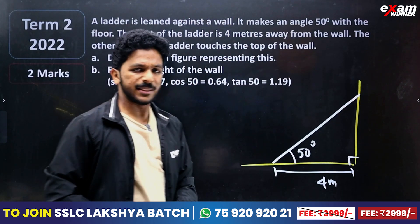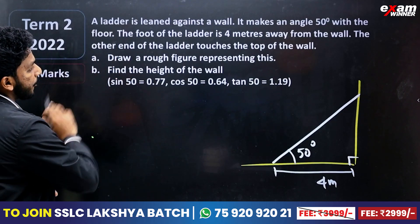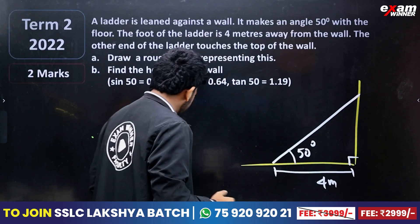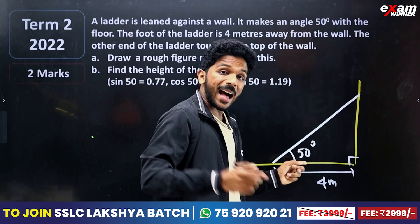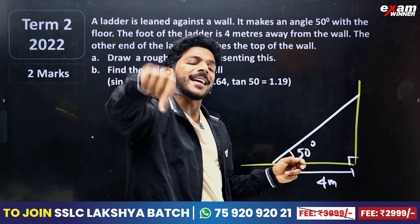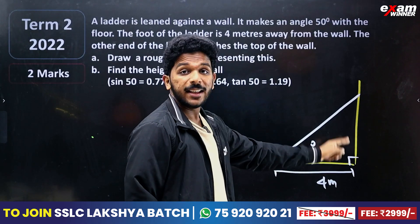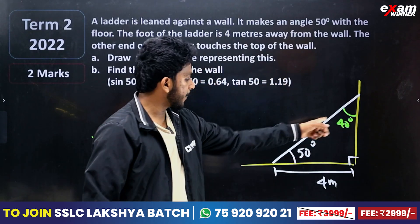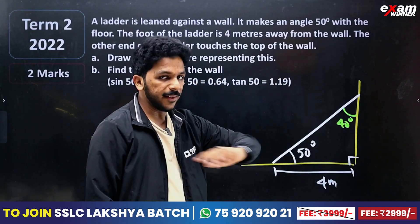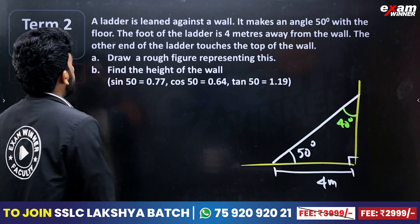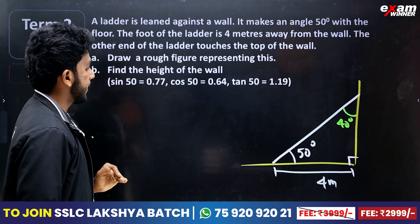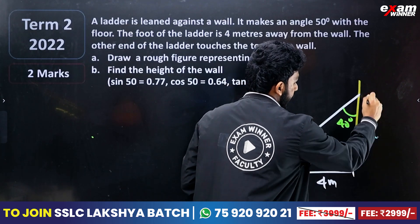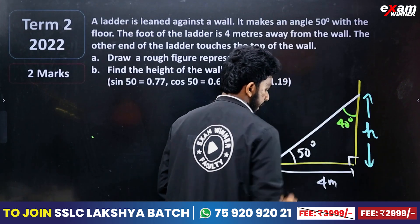Draw a rough figure. Here we have 50 and 90 degrees. 50 and 90 is 40 — do you understand? If you add all the angles, it is 180. 40 plus 50 is 90, and 90 plus 90 is 180. Find the height of the wall. Here we have the height of the wall. It is 4 meters.